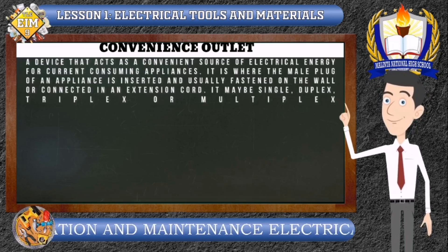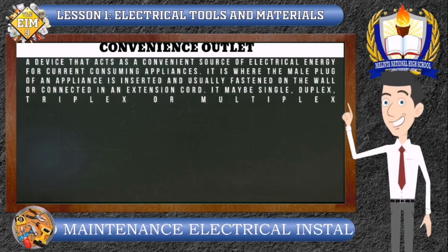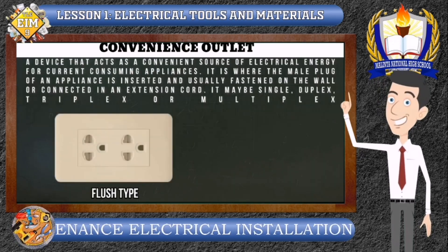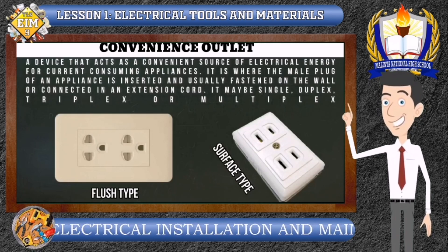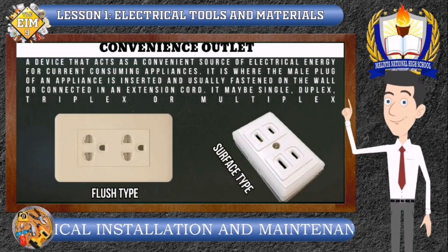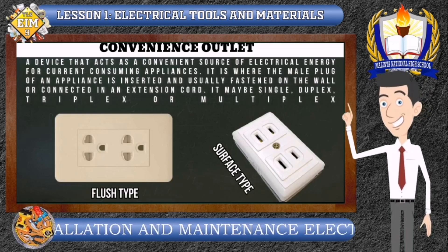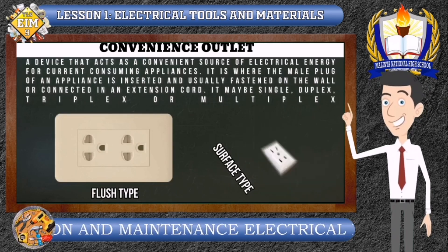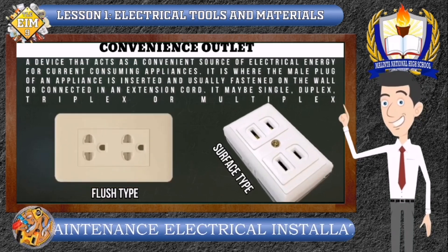Convenience Outlet. A convenience outlet is a device that acts as a convenient source of electrical energy for current-consuming appliances. It is where the male plug of an appliance is inserted and is usually fastened on the wall or connected in an extension cord. It may be single, duplex, triplex, or multiplex, and could be surface type or flush type.